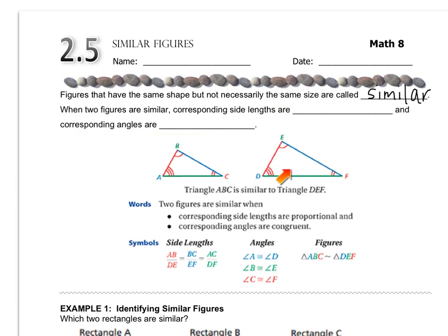But this one is bigger than the one on the left. When two figures are similar, corresponding side lengths are proportional, and corresponding angles are congruent. So while the sides aren't necessarily the same size, the angles are.